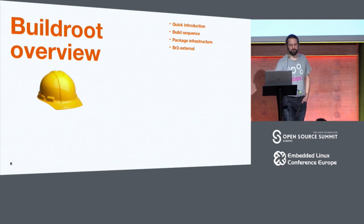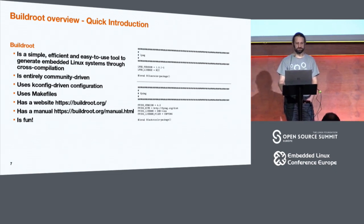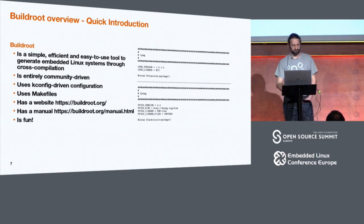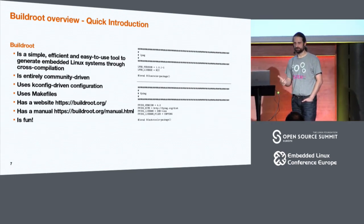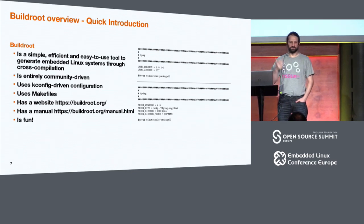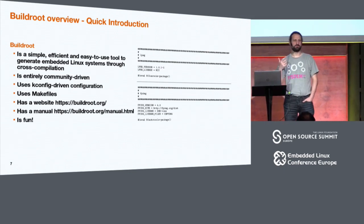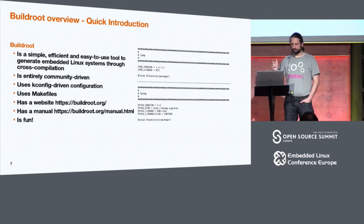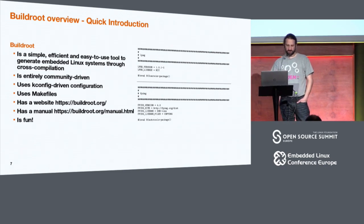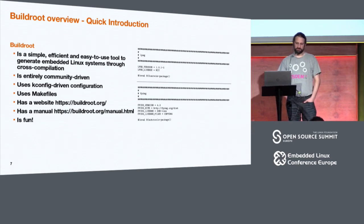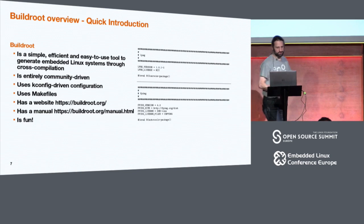Quick overview of Buildroot: it is a simple, efficient, and easy-to-use tool to generate embedded Linux systems through cross-compilation. That's what we wanted — cross-compilation with an easy-to-use tool. Basically using Buildroot is just running make defconfig and make, and that's it — all you get is the result. It's entirely community-driven, which is a good option for us because it is not a custom solution. It uses kconfig and makefiles, has a website and a big manual, and I find it pretty fun to work with.